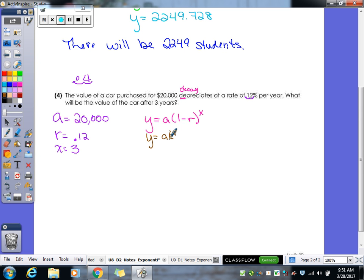So we got 20,000, 1 minus 0.12 to the third. So when I subtract what's our number inside our parenthesis? 0.88. 20,000 times 0.88 to the third. What do we get as our answer?